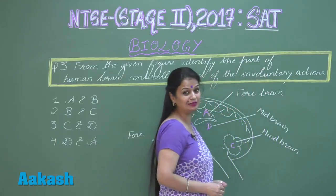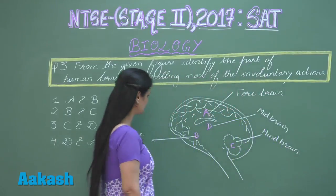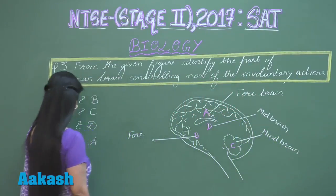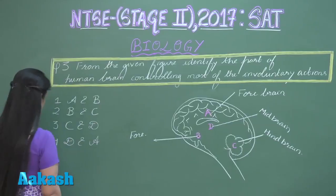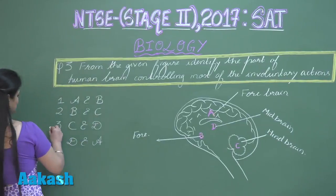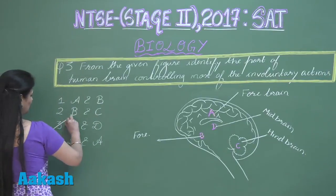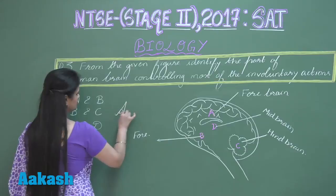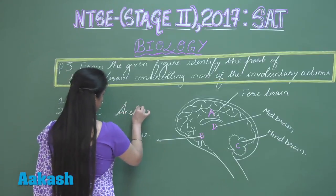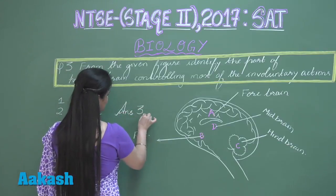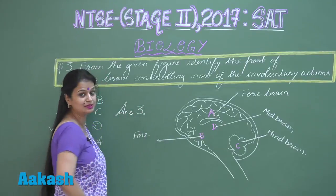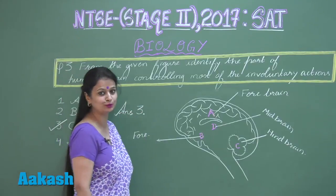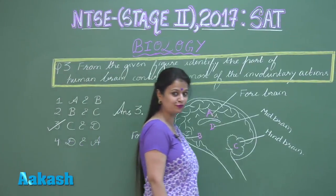Since the hindbrain and the midbrain control involuntary actions, the correct option is the third one — C and D. So the answer for this question is option number three.